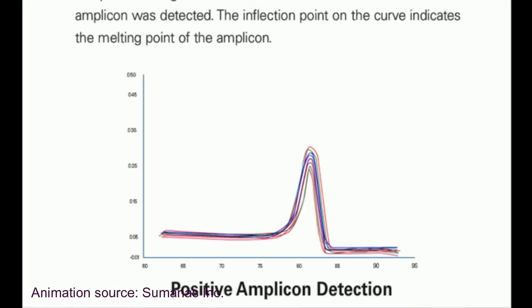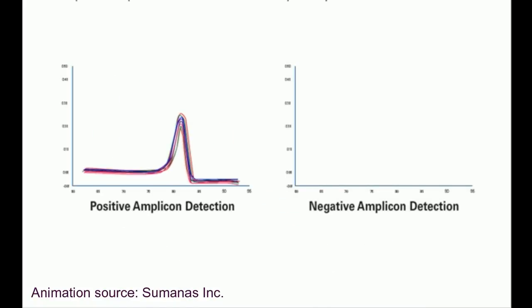For SYBR Green detection, it is important to run a melting curve analysis following real-time PCR to ensure that the desired amplicon was detected. The inflection point on the curve indicates the melting point of the amplicon. Note that contaminating DNA or primer dimers would show up as additional peaks separate from the desired amplicon peak.